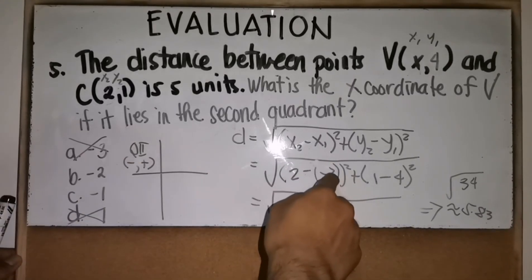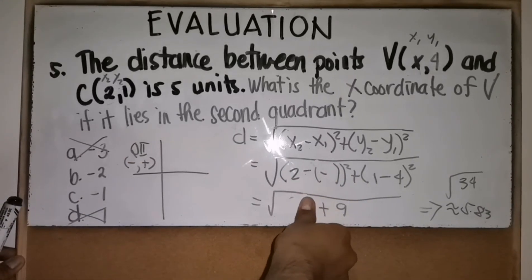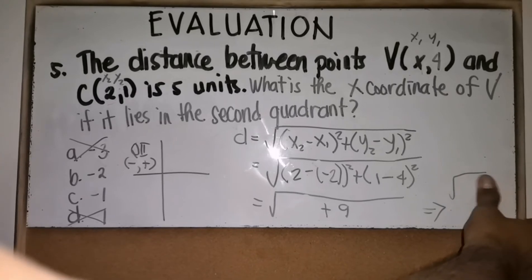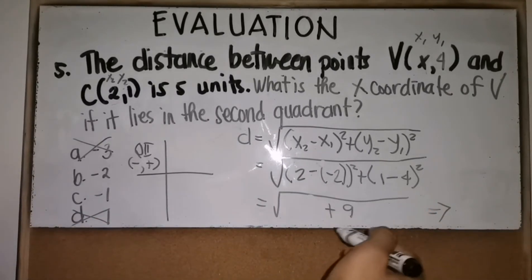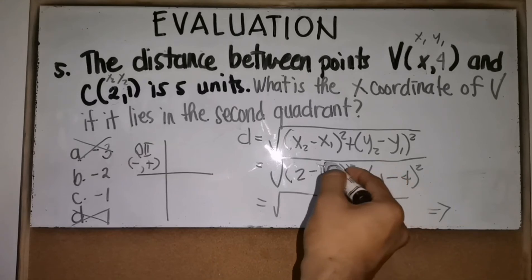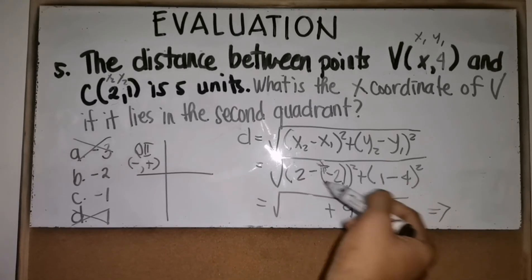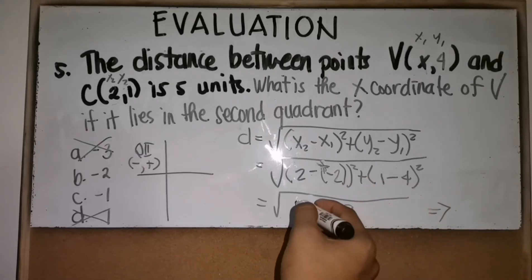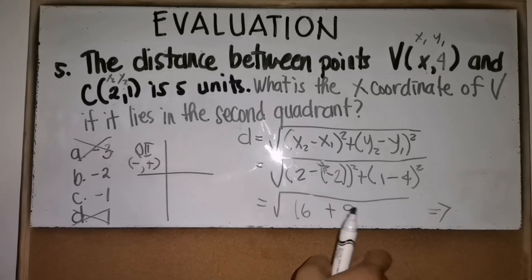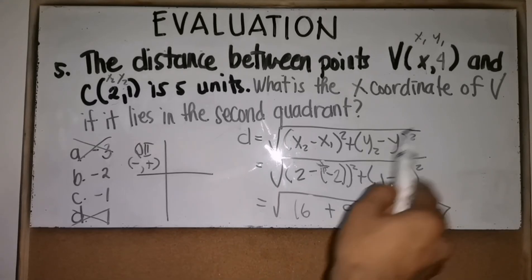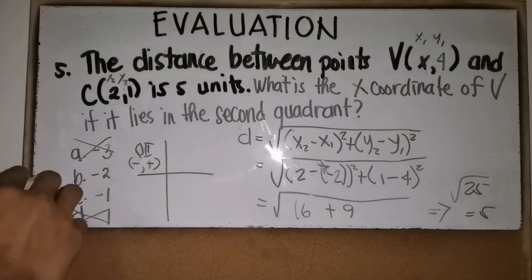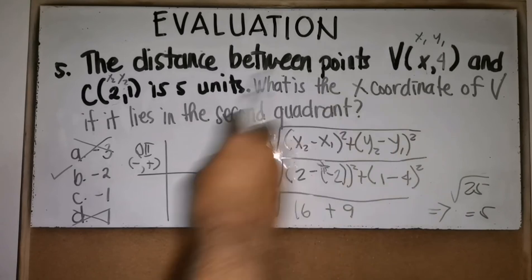Let's try x = -2. Substituting: 2 - (-2) = 4, so 4² = 16. The y-part remains: (1 - 4)² = 9. So d = √(16 + 9) = √25 = 5. That matches the given distance of 5 units, so the x-coordinate of V is -2.